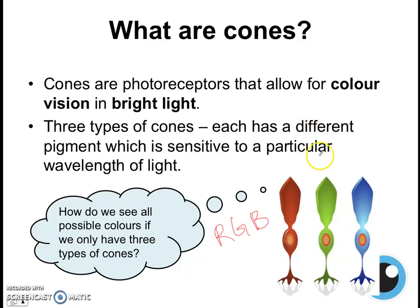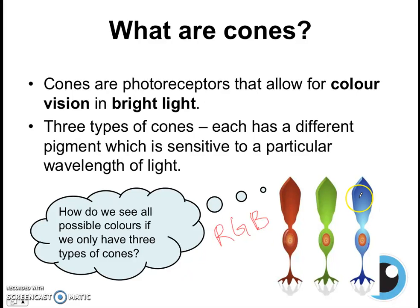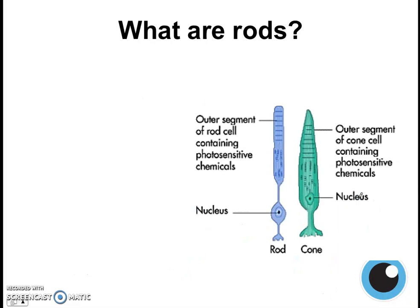For example, if red and blue cones were both stimulated, then we'd see something like a purple or magenta color.